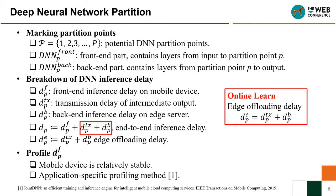First, we introduce our deep neural network partition. There are P potential DNN partition points. We define the front-end part as containing layers from the input layer to the partition point, and the back-end part as containing layers from the partition point to the output layer. We break down the DNN inference delay: the end-to-end inference delay consists of the front-end inference delay on the mobile device, the transmission delay of the intermediate output, and the back-end inference delay on the edge server.